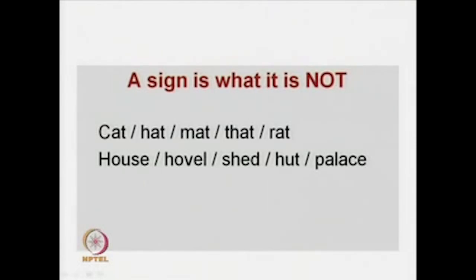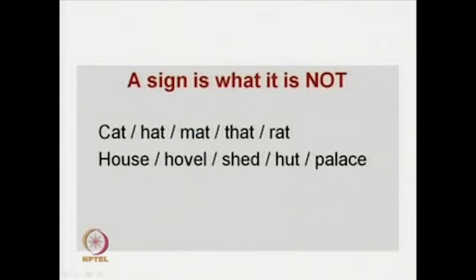For instance, a cat is a cat not because of its ontology — the meaning of cat arises by differentiation with other similar sounding words like hat, mat, that, and rat. It is because it is in a system — this is very important. Remember, structuralism is all about systems, it is all about relations, it is all about structures, it is all about relations among different units in a particular structure. The meaning of cat or mat, for instance, is derived from its differentiation with similar sounding words.